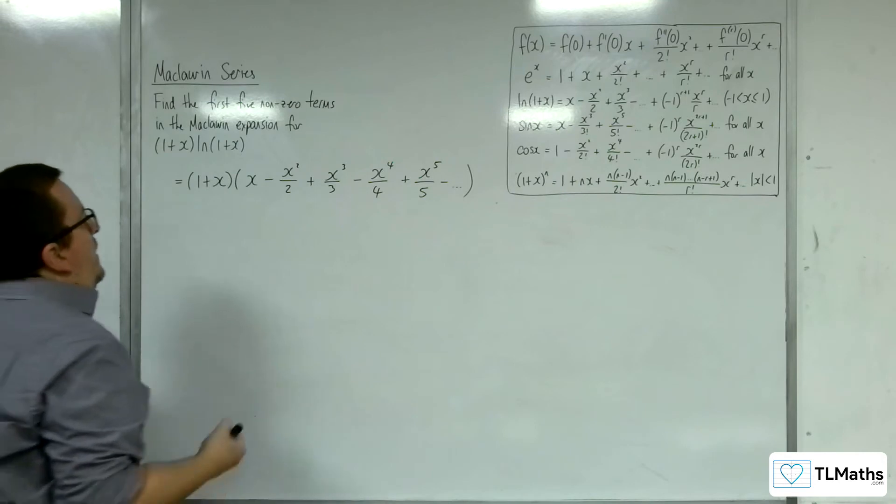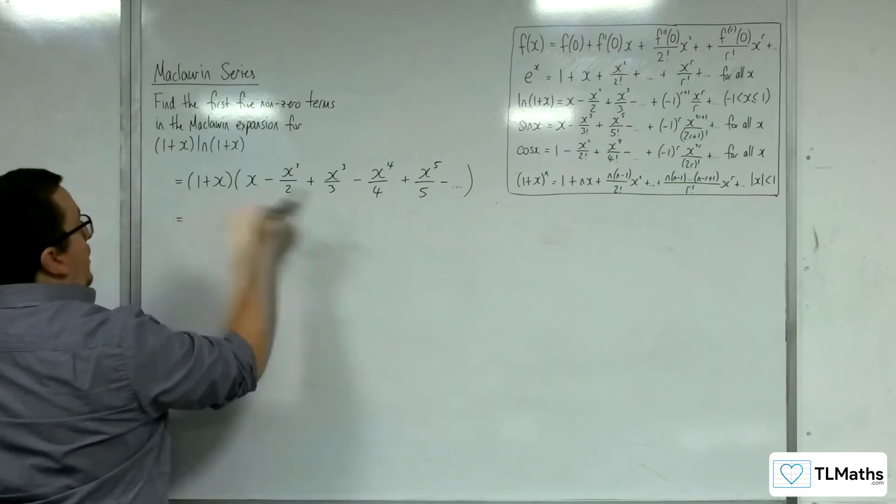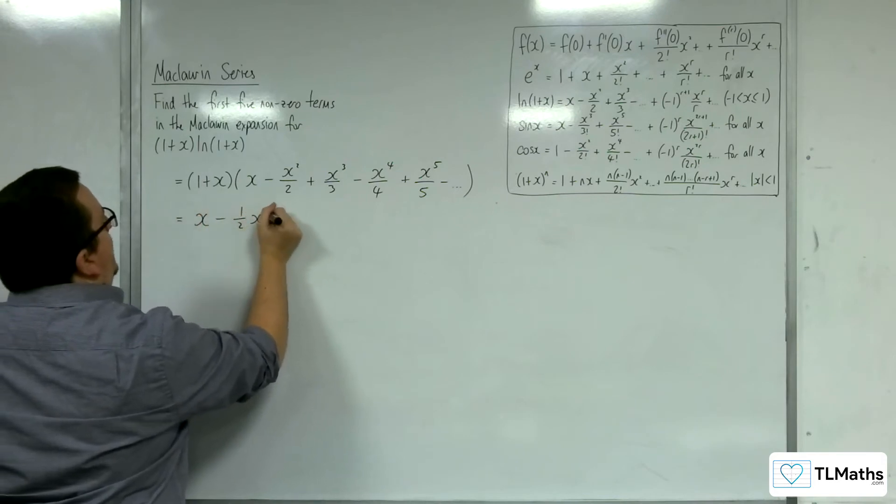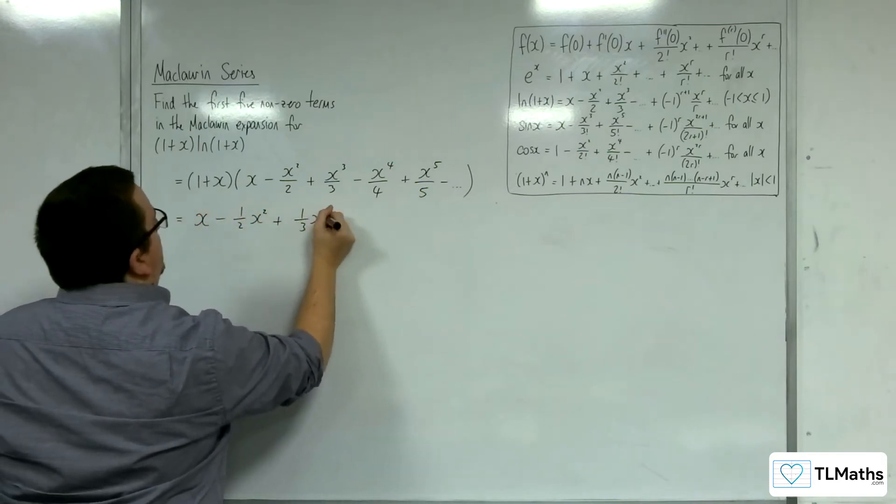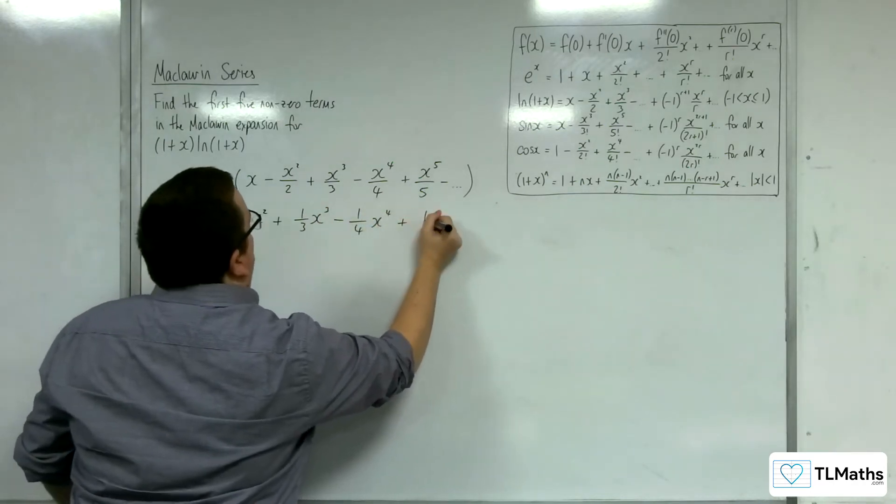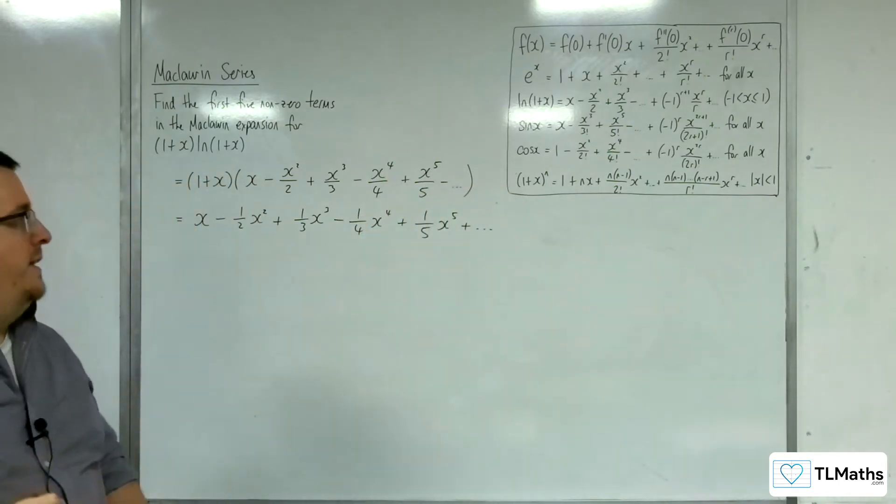So let's see this in action. We've got 1 times each of these. So we're going to have x - (1/2)x² + (1/3)x³ - (1/4)x⁴ + (1/5)x⁵ plus all the other terms I'm not interested in.